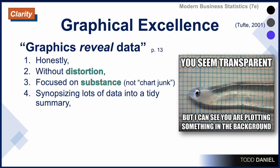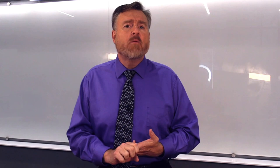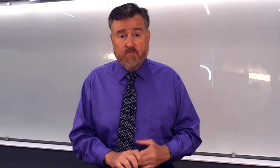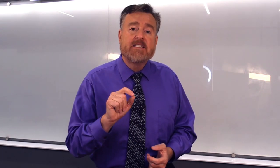Excellent graphics support the text description. If you are including information in the text, that same information does not need to be duplicated in a table or a graph. However, you can create a graph or table to display a larger amount of information, and then the text should support what we see in the graph. The graph, the table, and the text should all be telling us the same thing — the text clarifies the most important parts of our distribution.